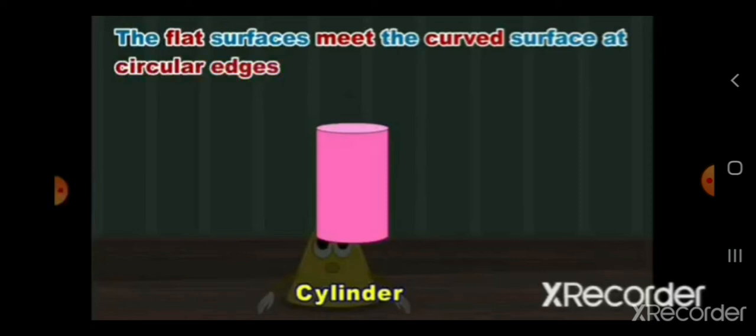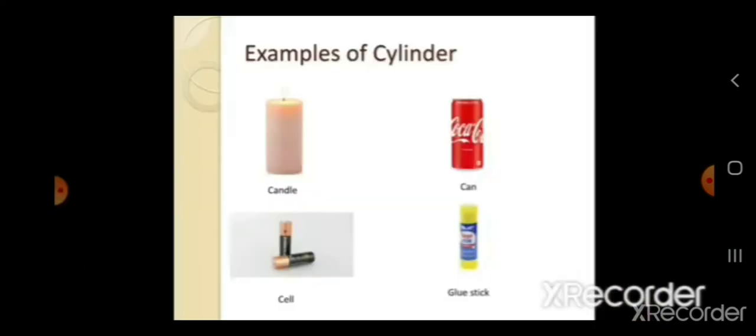The flat surface meet the curved surface at circular edges. So, how is the edge over here? It is circular. That means it is a circle in shape. So, it is having a circular edge. What are the examples of cylinder? Candle, a can, a glue stick and a cell or the batteries that we say.